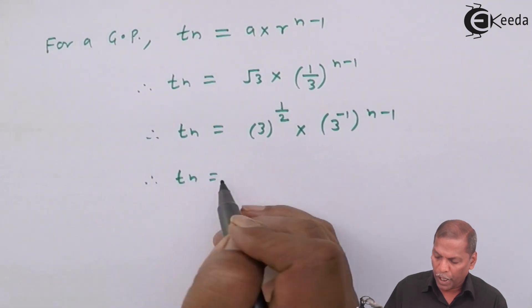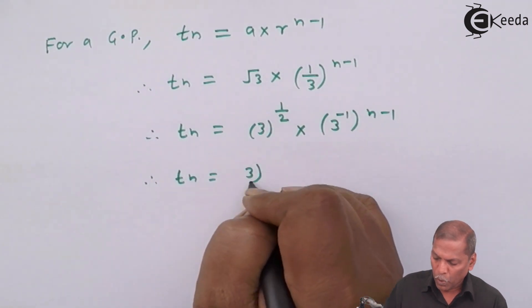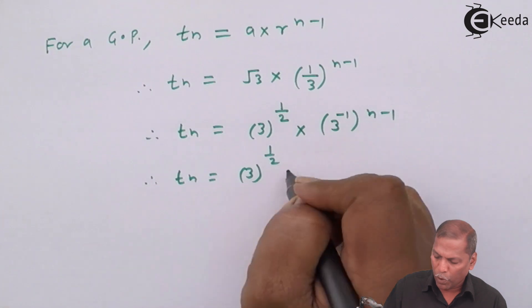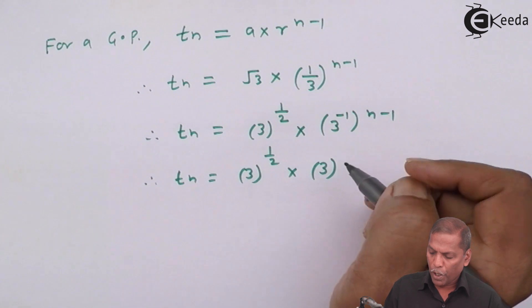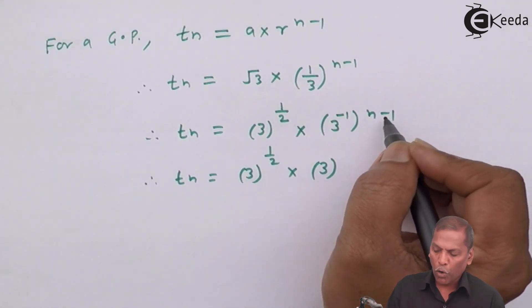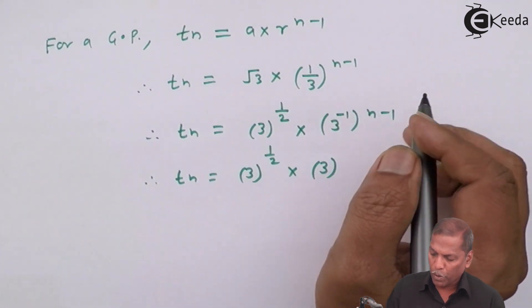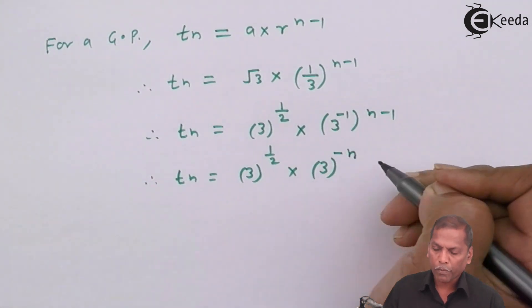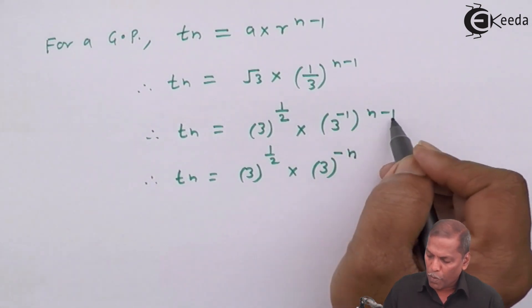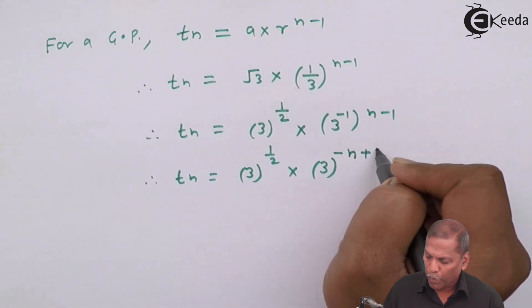Therefore, Tn equals 3 raised to 1 by 2 times 3 raised to, now n minus 1 we have to multiply with minus 1, so minus 1 into n gives minus n, minus 1 into minus 1 gives plus 1.